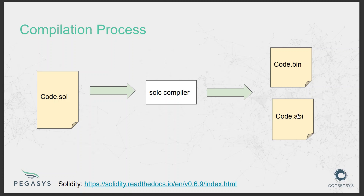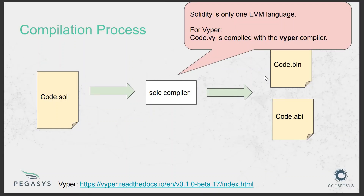The ABI defines the function interface so that any application wanting to interact with the smart contract knows the exact functions the contract contains, the arguments each function requires, and their types. Solidity is a high-level language, and after compilation the compiler produces bytecode — it is this bytecode that the EVM actually understands. The bytecode contains the opcodes and data that are sent to the EVM.